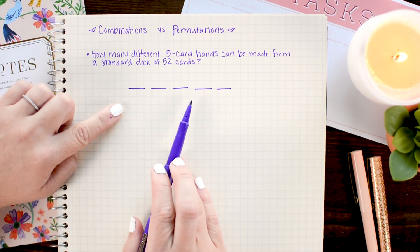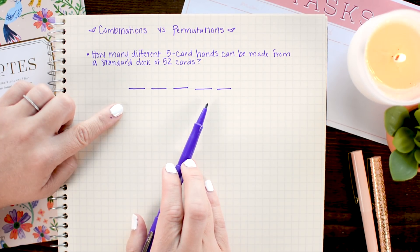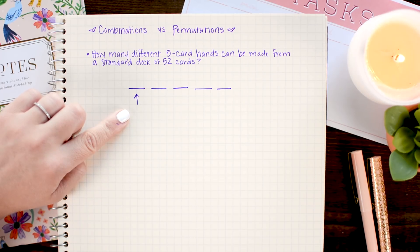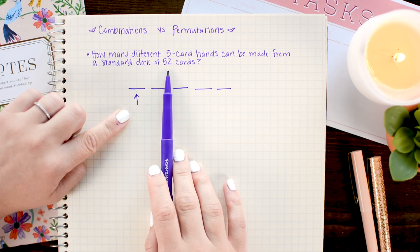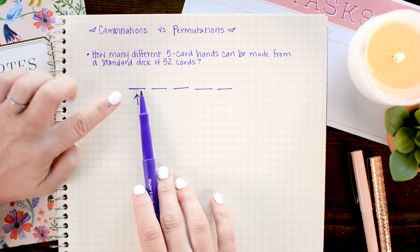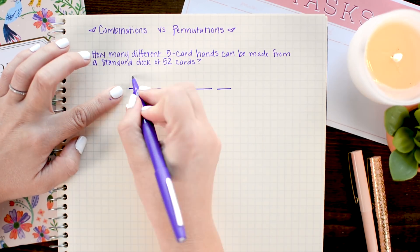The easiest way to get started with a counting problem is with a picture. So each of these slots represents a potential card in my hand. When I draw the first card from the deck of 52, I have 52 possible options. So I'm going to put the number 52 in my first slot.